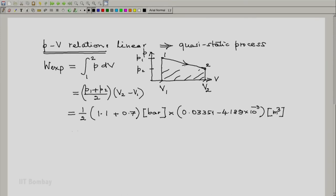When we multiply this out, we get 0.02644, and the units will be bar meter cube. Although this is a good enough answer, we notice that bar meter cube is not a proper unit.